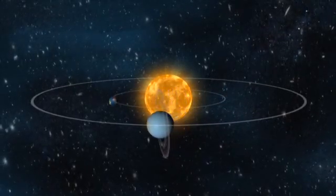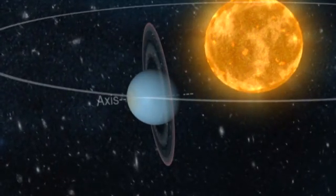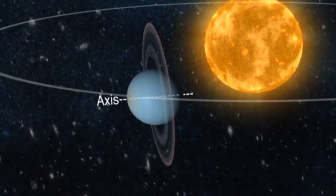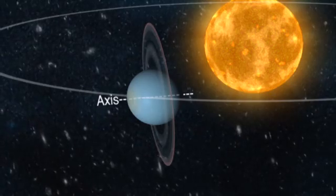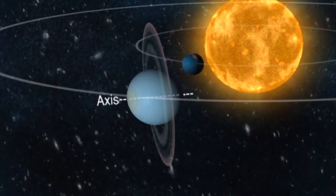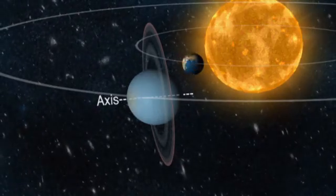Uranus is unique among the planets because its axis lies nearly level with the path around the sun, causing it to appear to be rotating on its side. A day on Uranus takes a little over 17 Earth hours.